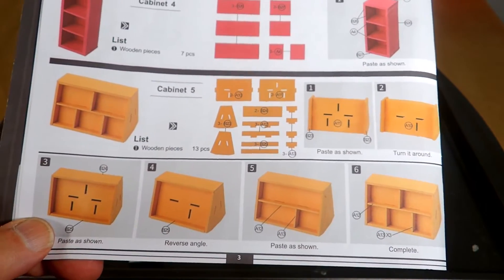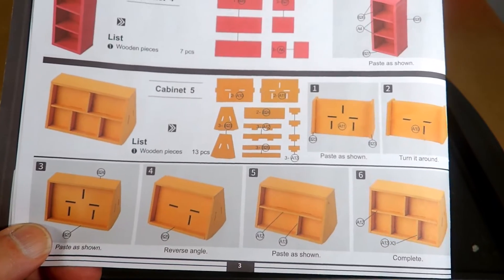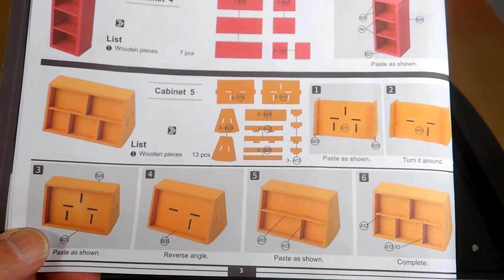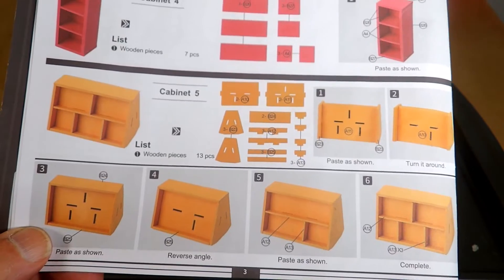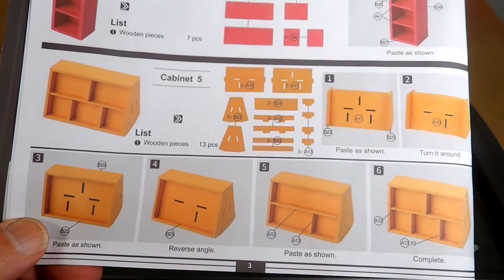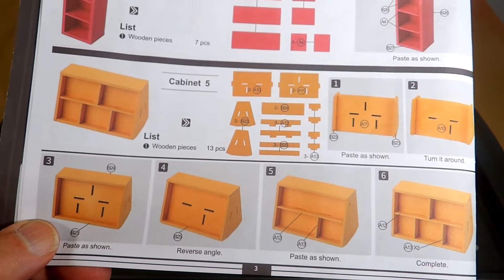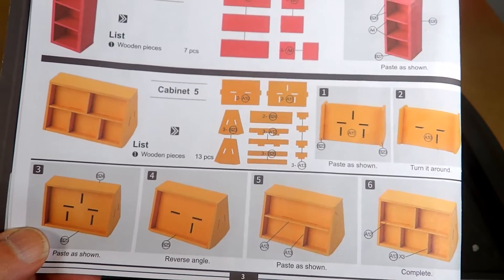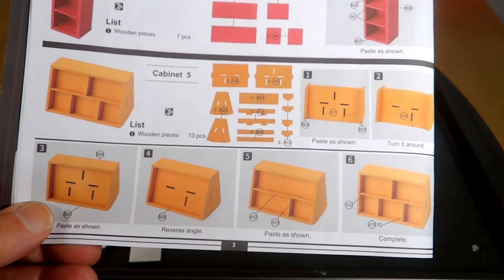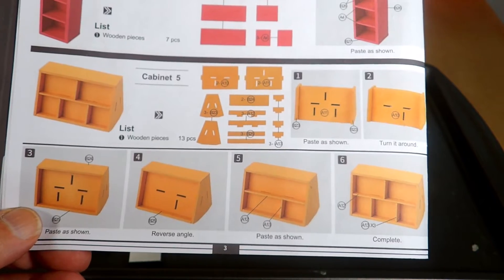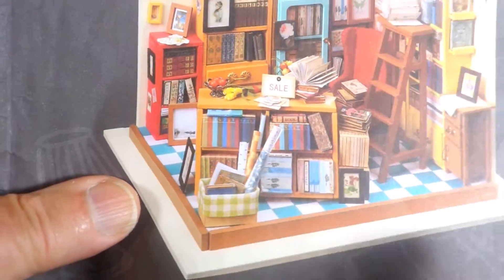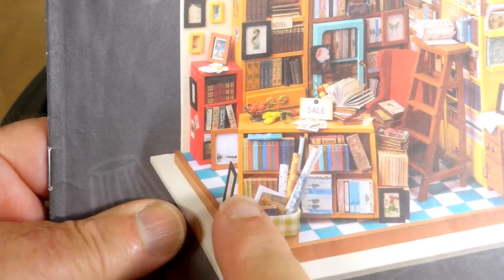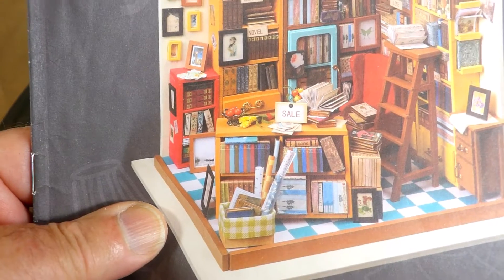So here we have the fifth bookshelf or bookcase according to the directions, and I'm not even sure we're going to be using this bookcase but we're going to build it just in case we want to. It's a little bit different bookcase as you can see, it sits low. Let me show it in maybe this picture which is right here. That's the bookcase that we're working on, so let's get right to it.